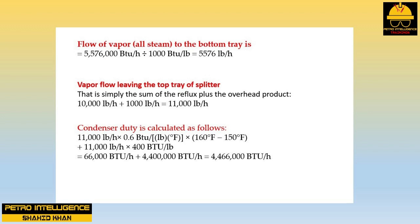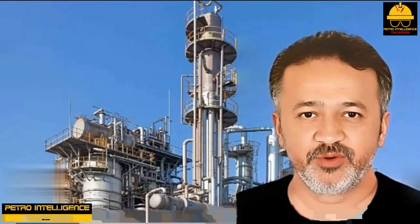The vapor flow leaving the top tray is simply the sum of the reflux plus the overhead product: 10,000 lb/hr + 1,000 lb/hr = 11,000 lb/hr. Condenser duty is calculated as follows: 11,000 lb/hr × 0.6 BTU/lb·°F × (160 − 150)°F + 11,000 lb/hr × 400 BTU/lb = 66,000 BTU/hr + 4,400,000 BTU/hr = 4,400,000 BTU/hr (approximately).